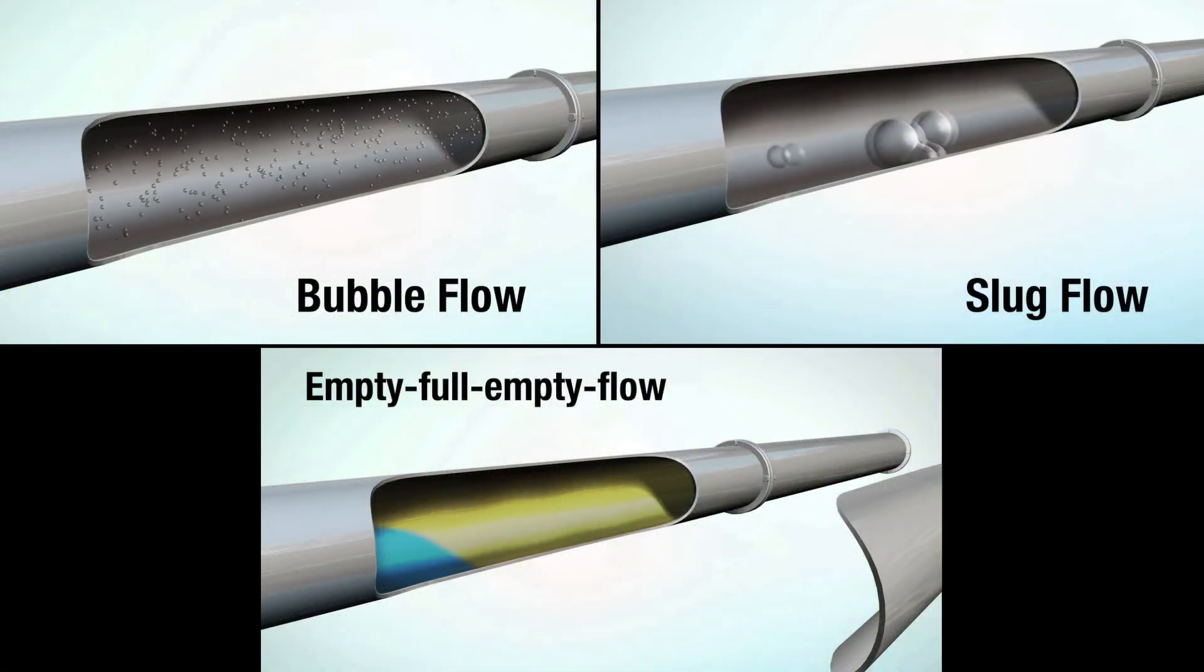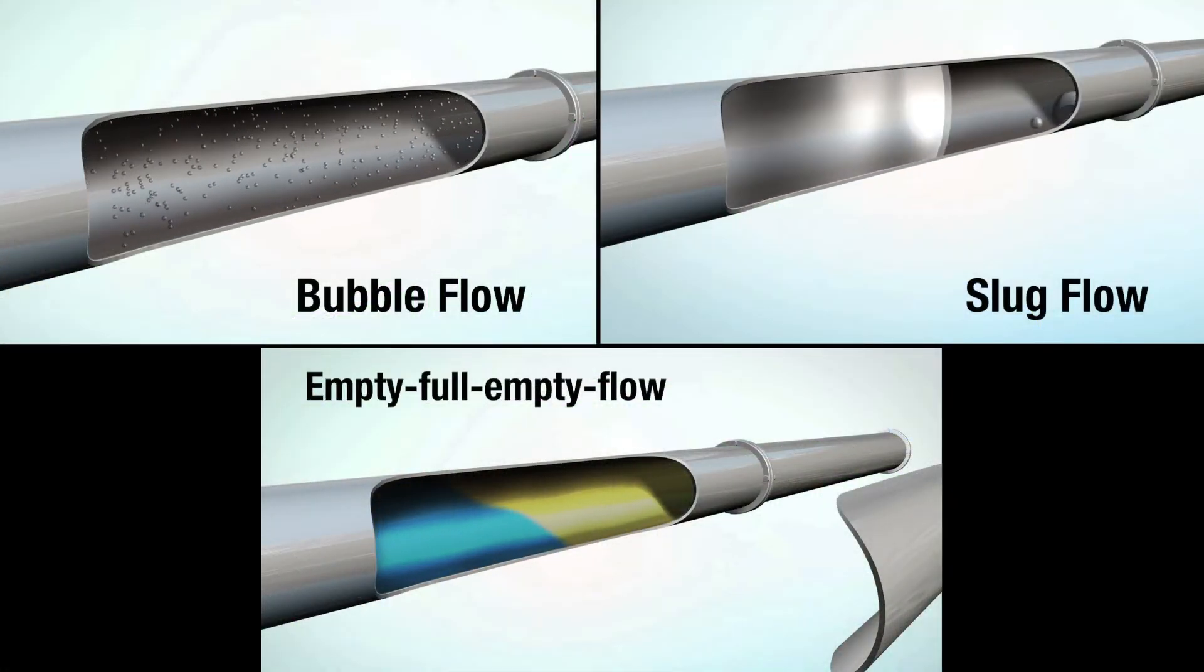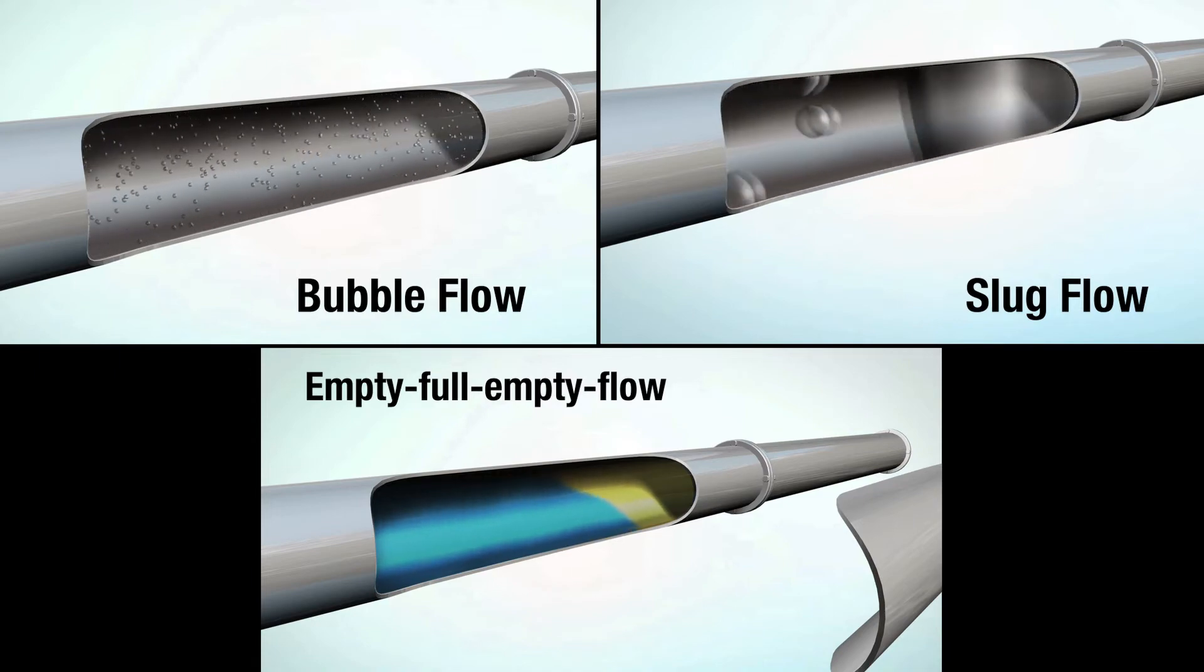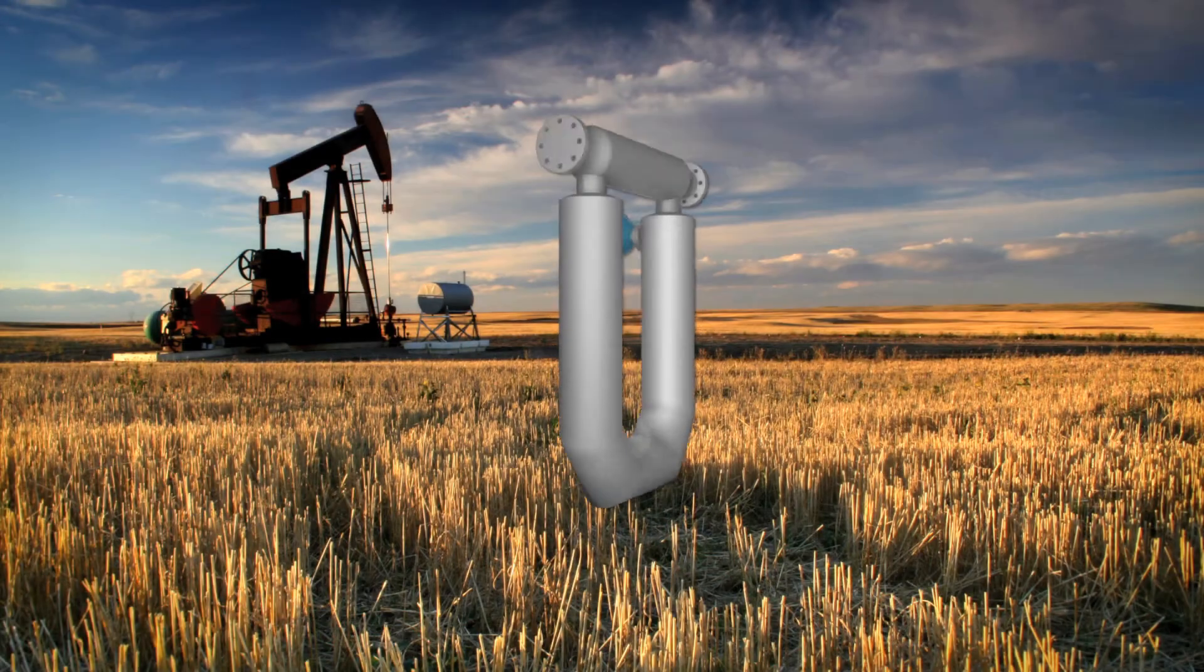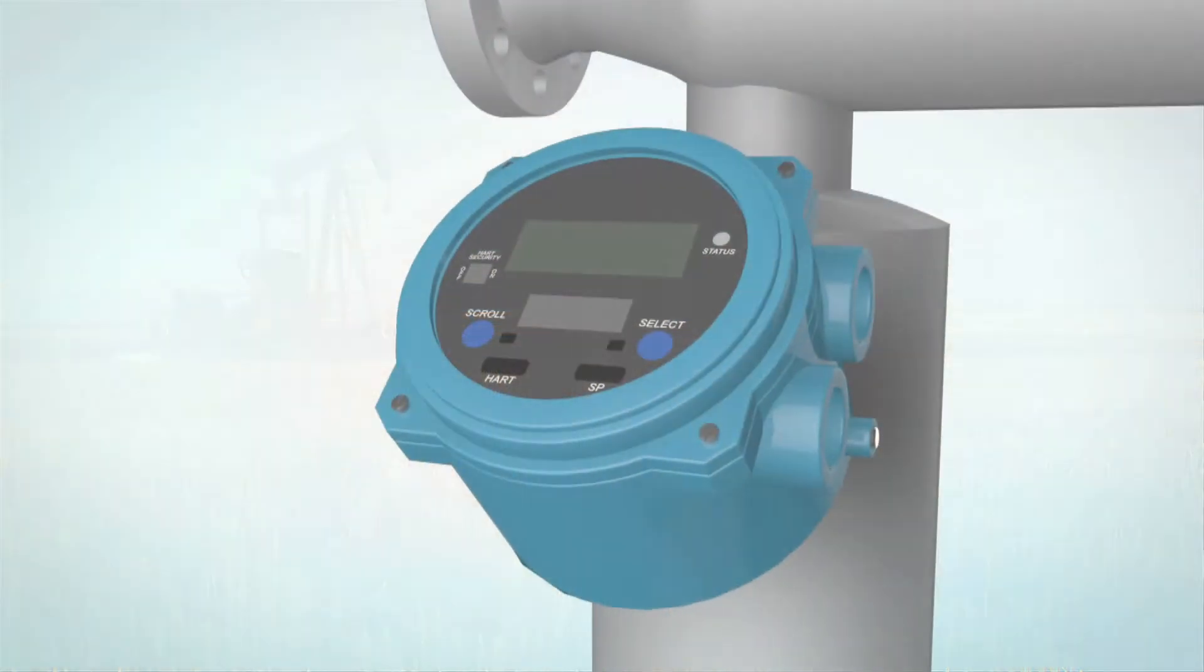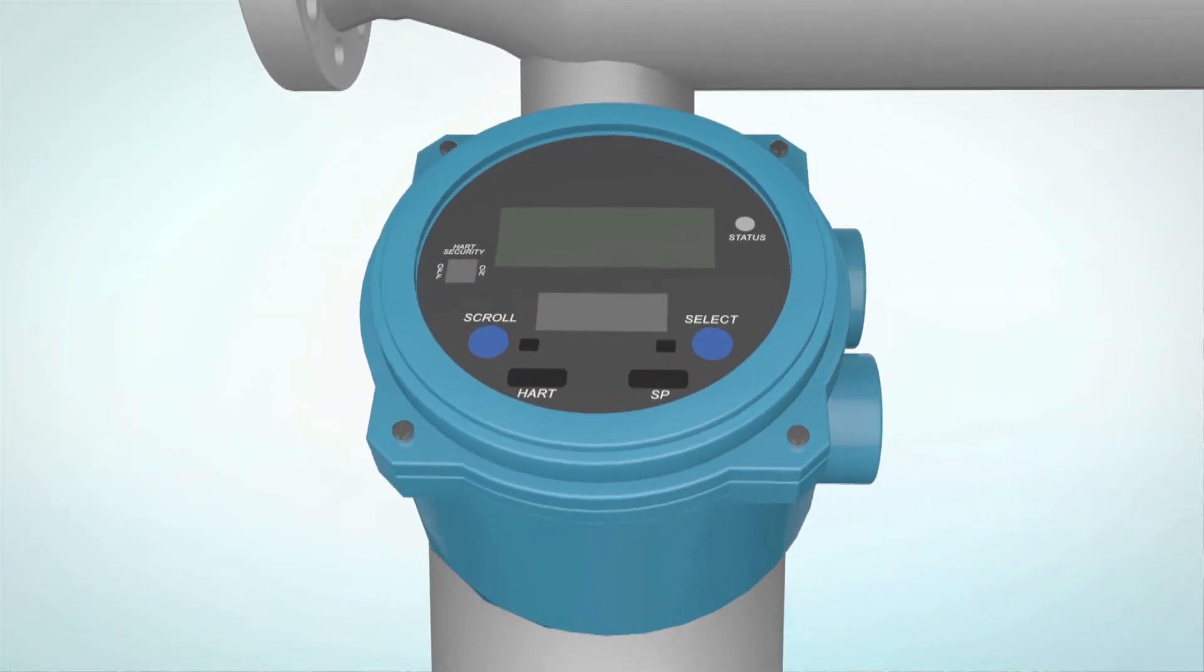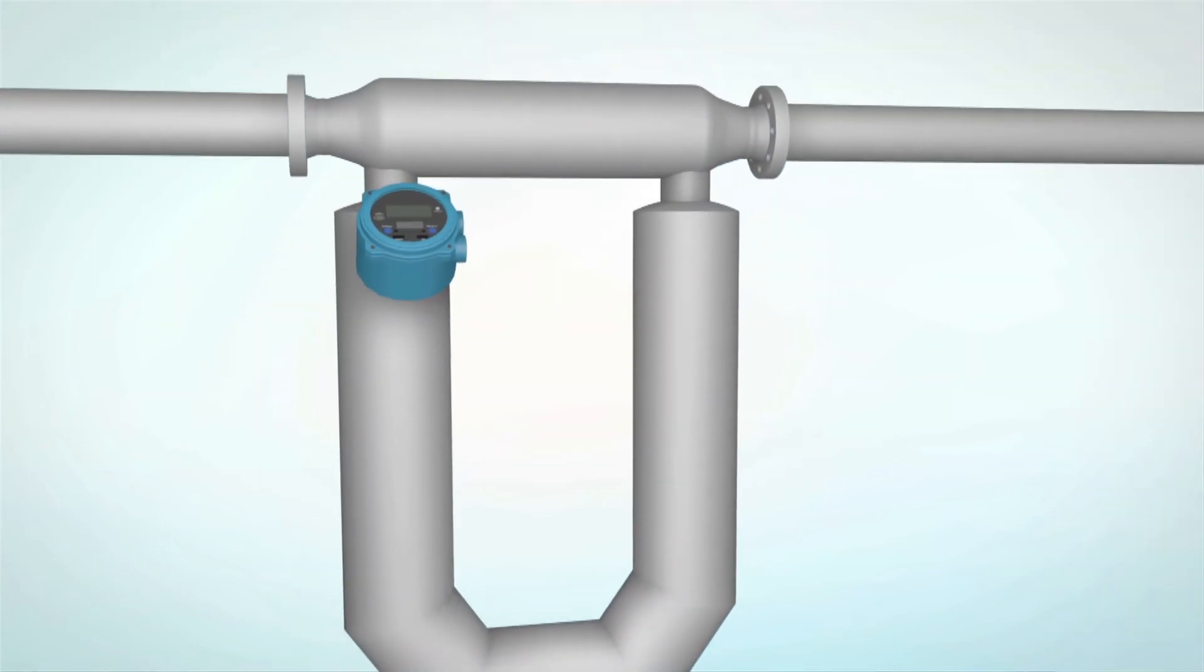Today we have illustrated three different types of entrained gas in fluid applications: bubble flow, slug flow, and empty-full-empty flow. Micromotion Elite meters employ sophisticated sensor and electronics design and work effectively in many entrained gas applications.